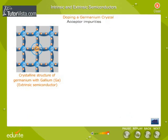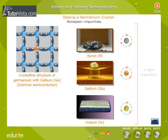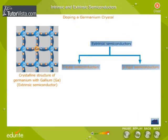Acceptor impurities are those elements which create positive carriers or holes that can accept electrons. Trivalent elements like boron, gallium, or indium are acceptor impurities. Acceptor impurities are also known as p-type impurities. Depending upon the type of impurity added, the extrinsic semiconductors can be classified as n-type semiconductor and p-type semiconductor.